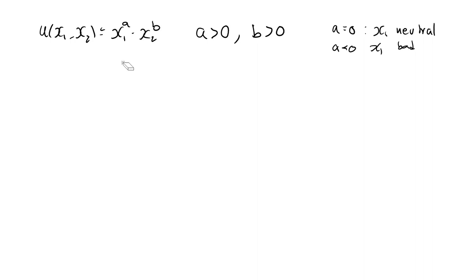Same argument goes for b. So this is why I want to restrict a and b to be both strictly positive. That will guarantee a strict increase in u when either x1 or x2 increases, making both goods desired.